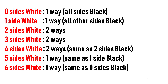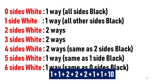Four sides white is possible in two ways — same as two sides black. Five sides white is possible in one way — same as one side black. Six sides white is possible in one way — same as zero sides black. So total equals 1 plus 1 plus 2 plus 2 plus 2 plus 1 plus 1, which is equal to 10. There are 10 ways possible if each face of a cube can be painted in black or white colors.